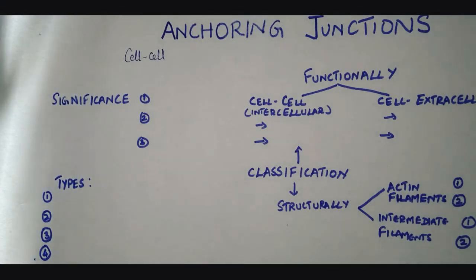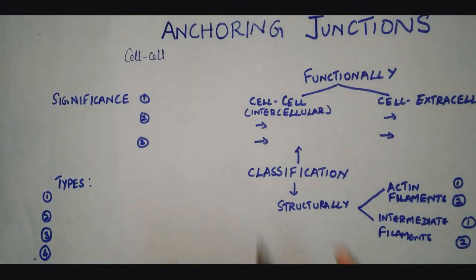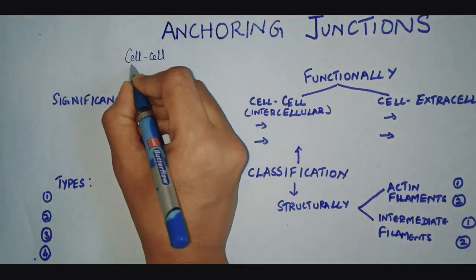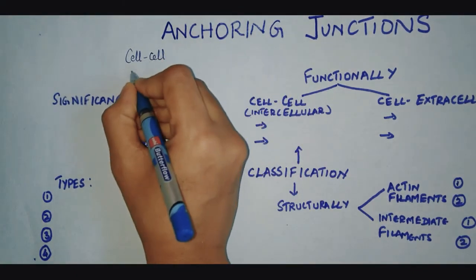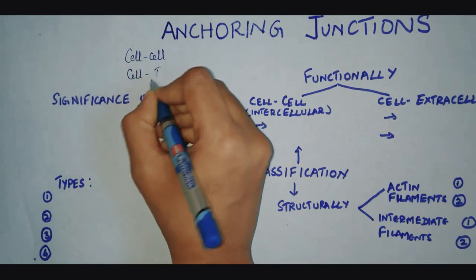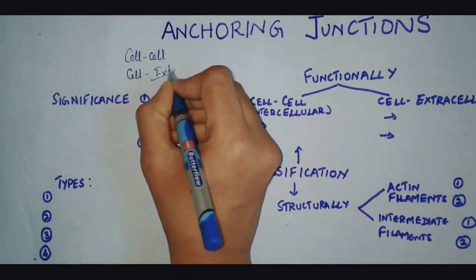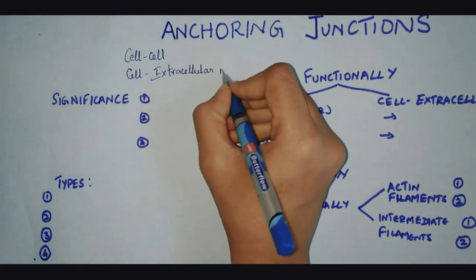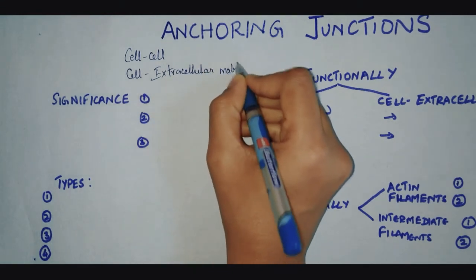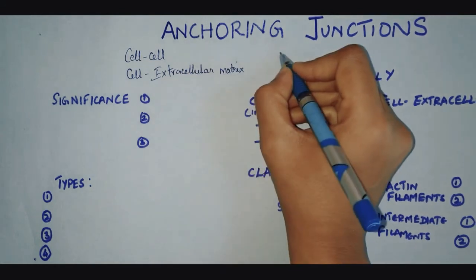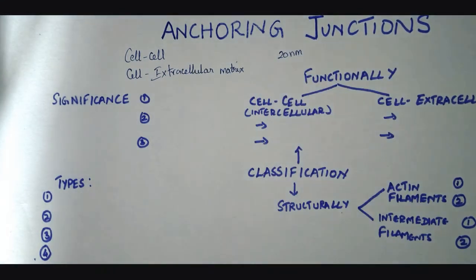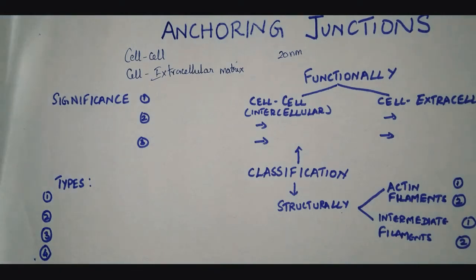Let us see about anchoring junctions. Anchoring junctions adhere the cell to each other or they adhere the cell with the extracellular matrix. In contrast to tight junctions, in the anchoring junction the intercellular space is maintained at 20 nanometers, whereas in the tight junction the intercellular space is reduced.